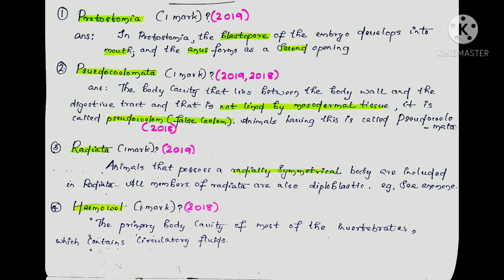The next question is Haemocoel. It is the primary body cavity of most invertebrates, which contains circulatory fluids.